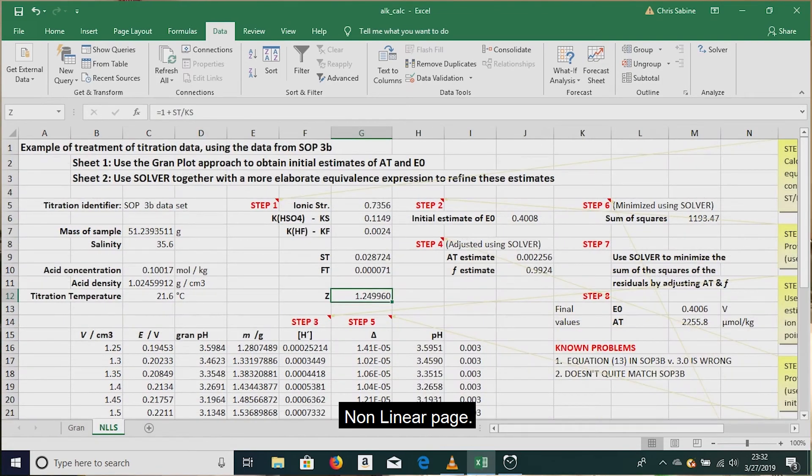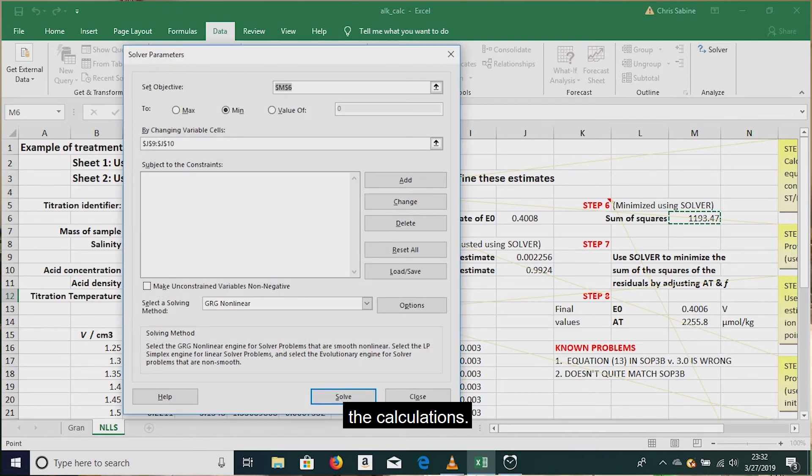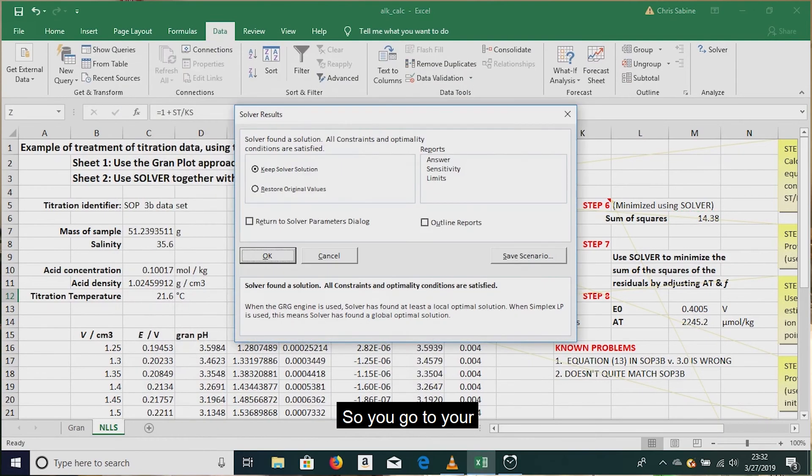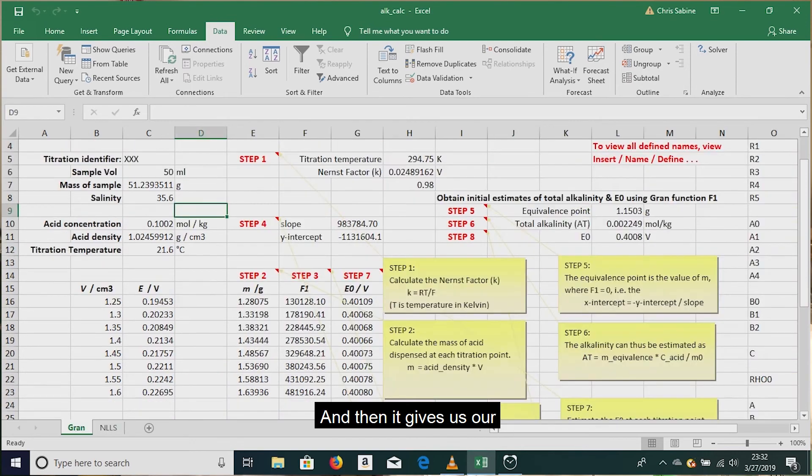Then we go over to the nonlinear page. All the information from the previous page is copied over, but we want to do the calculation. So you go to your Excel function called Solver, and you click on that, tell it to Solve, OK. And then it gives us our alkalinity value of 2347.6.